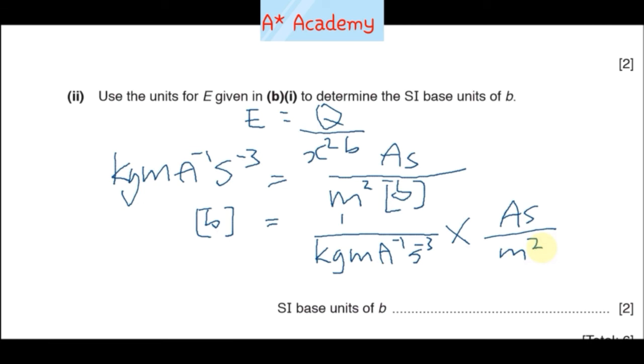They simplify to give us A squared, m to the minus 3, s to the power 3... or rather s to the power 2. S to the power 2, right there, because these two... this will divide into that one, so we'll get s to the power 2, and per kg. Those are the units for b.